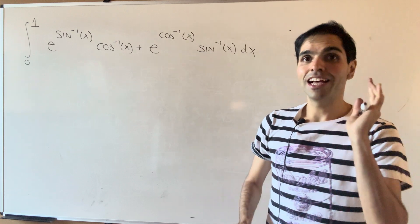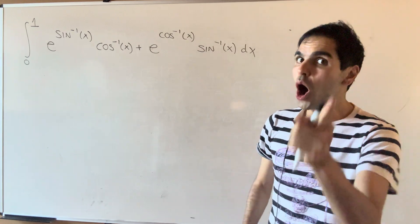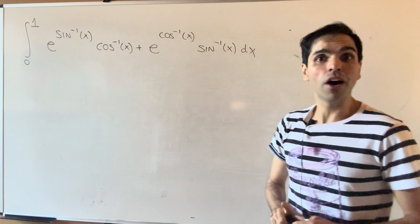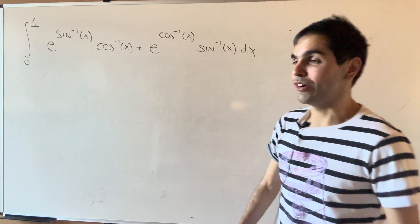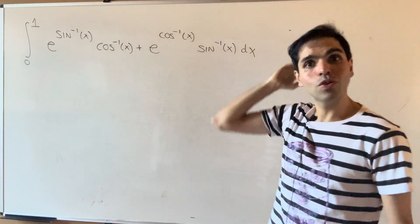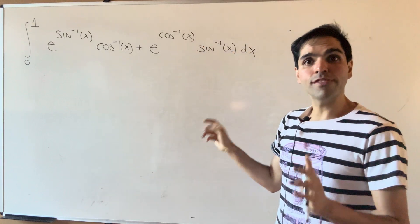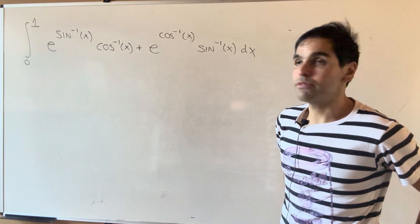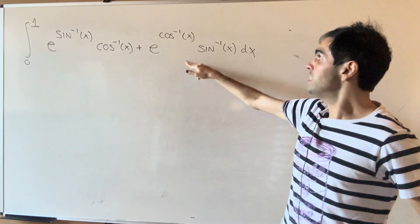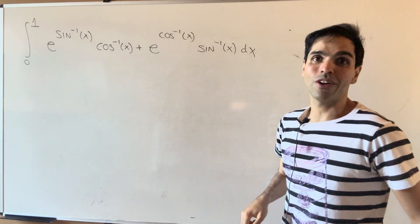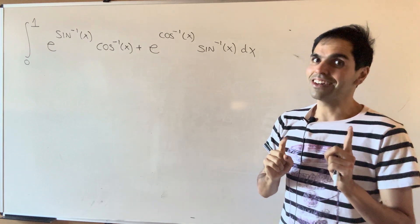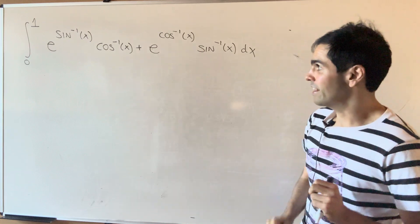All right, thanks for watching. Are you ready to evaluate the following monster integral? Namely, the integral from zero to one of e^(arcsin(x)) times arccos(x) plus e^(arccos(x)) times arcsin(x) dx. And you'll see it's not as bad as you might think.